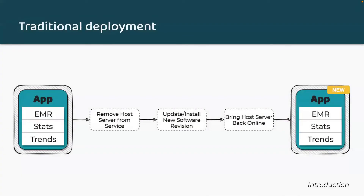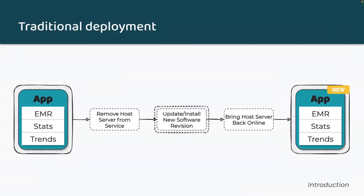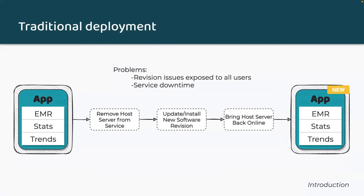When there are new revisions or new changes to a software, the software in production is replaced by a process called deployment. Currently, Chart Health's deployment pipeline looks like this. First, they take down the host server, which means their application will be down for the duration of the update. Second, they update whole or large parts of an application in one go or in one big bang. And third, they bring the server back online. The problem with traditional or big bang deployment is that it doesn't align with Chart Health's current service priorities. EMR service updates go out to everyone, which means that the entire user base will be exposed to all issues if there are any problems with the revision, thus potentially compromising the integrity of EMRs.